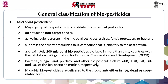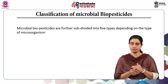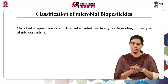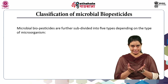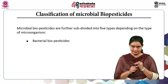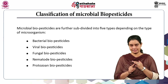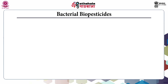Microbial biopesticides are delivered to crop plants either in live form, dead form or sporulated form. Microbial biopesticides are further subdivided into 5 types depending on which type of microorganisms are involved. These 5 subtypes are bacterial biopesticides, viral biopesticides, fungal, nematode and protozoan biopesticides. Coming to the subdivision of microbial biopesticides, the first one is bacterial biopesticides.